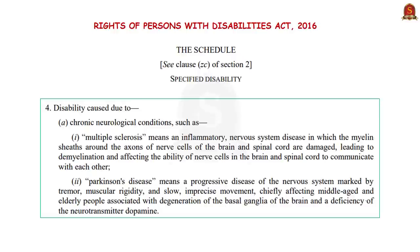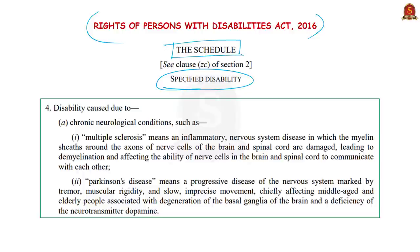Under Indian law, we should know whether the alleged and arrested person is a person with disability. To understand this, we look at the Rights of Persons with Disabilities Act of 2016, which talks about specified disability. According to this act, specified disability means the disabilities as specified in the schedule to the act. Parkinson's disease is listed as a specified disability, though under sections 56 to 59, assessment and certification of such specified disabilities is needed.